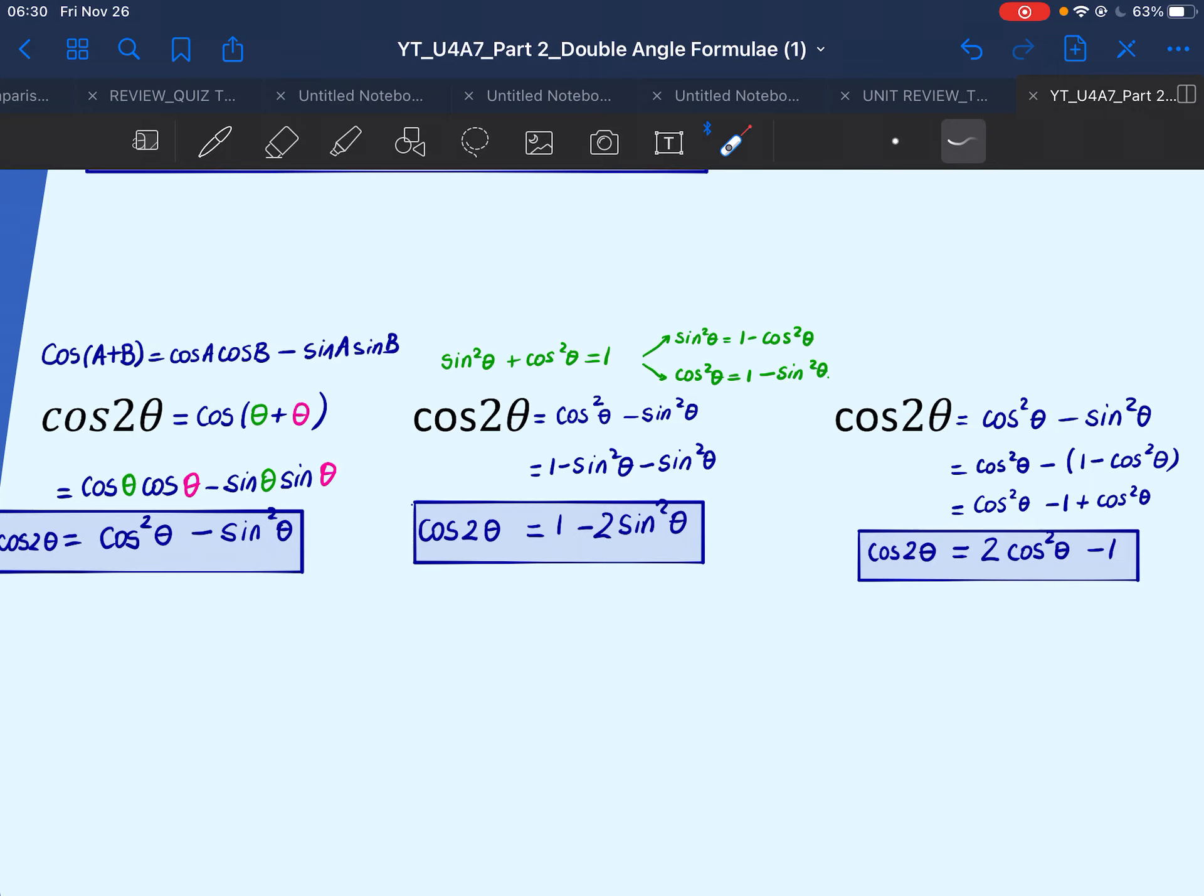We need to choose our formulas wisely. And we choose our formulas based on the information we are given. So if you are given just the sine, this will be a quicker way for you to find cos 2 theta. If you're given just cosine, this formula will be a quicker way to find cos 2 theta.